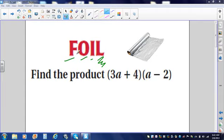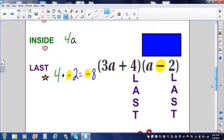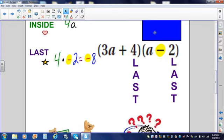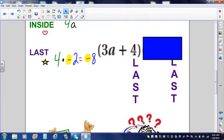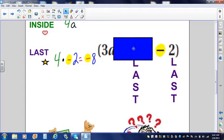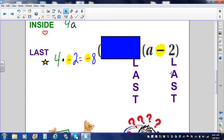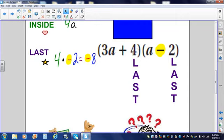I've done F first. O, outside. I, inside. Now, I'm going to do L, which is last. For my visual people, the 4 is the last term in the first set of parentheses. Negative 2 is the last term in the second set of parentheses. So, I have positive 4 times, parentheses, negative 2. That gives me a negative 8.